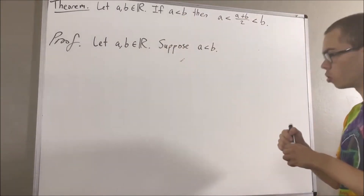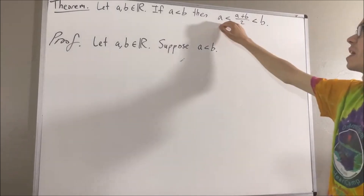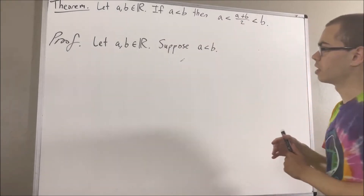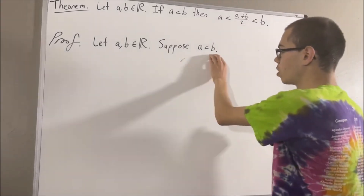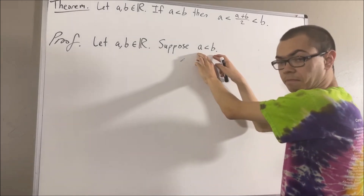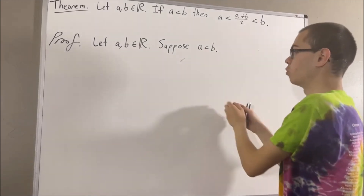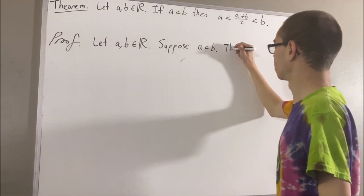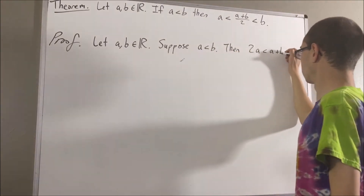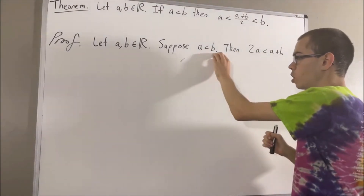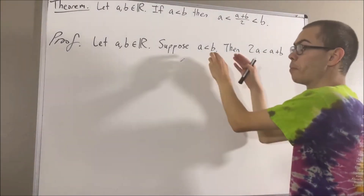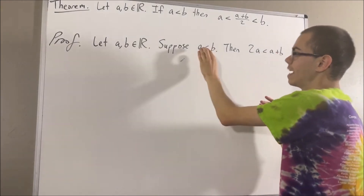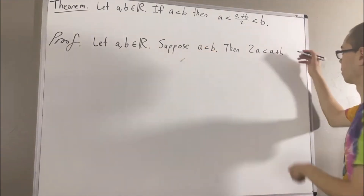From here, our whole goal is to show that this is true. Now to start out, let's take this inequality and add a on both sides. If we do that, we get that 2a is less than a plus b. Similarly, we can take this inequality and add b on both sides. If we do that, we get that a plus b is less than 2b.